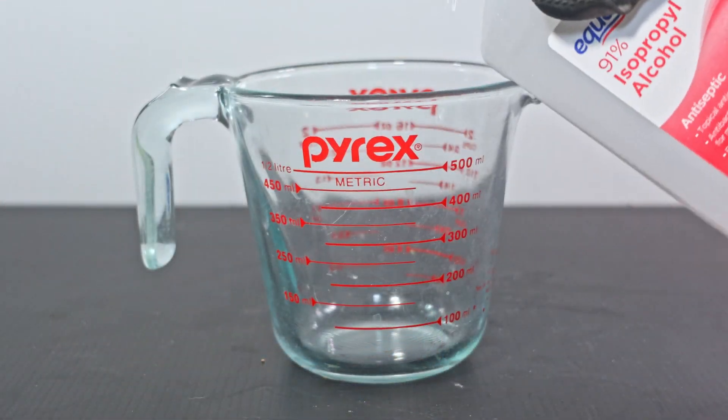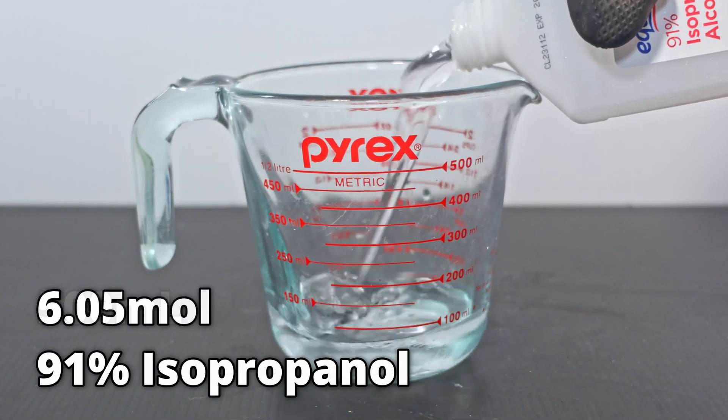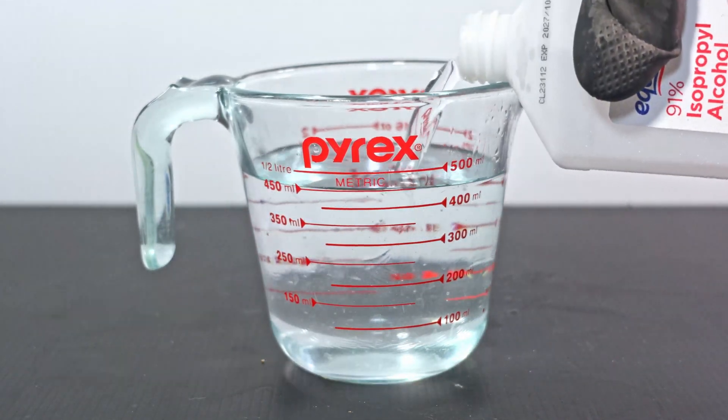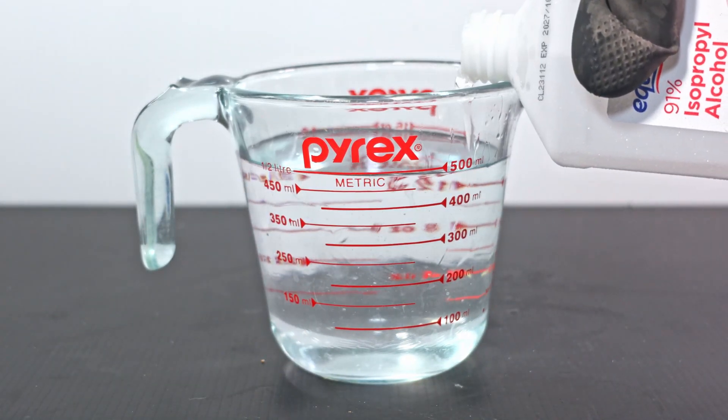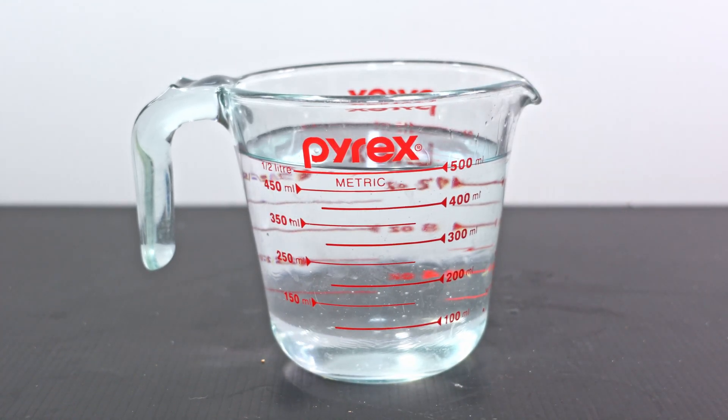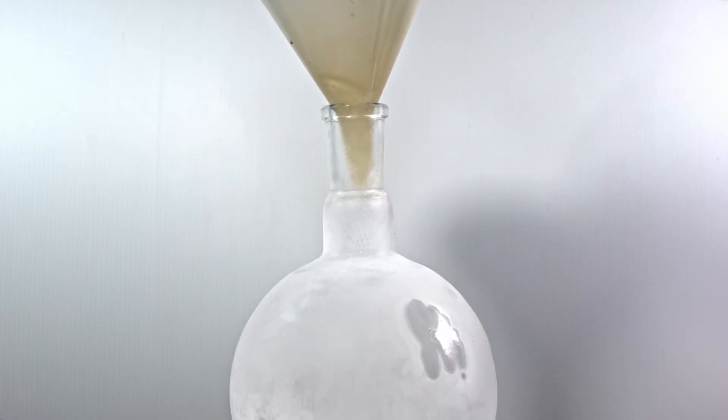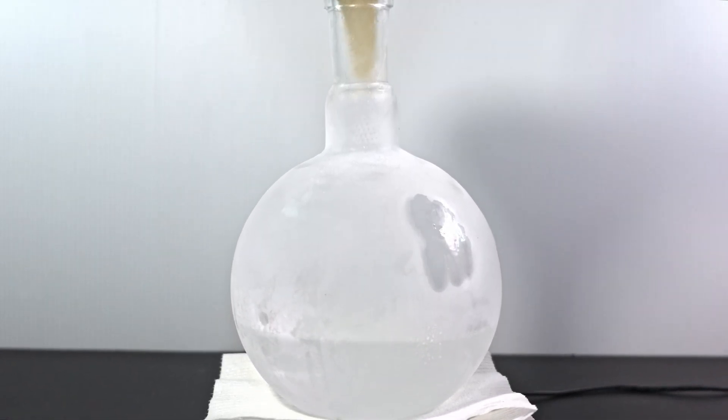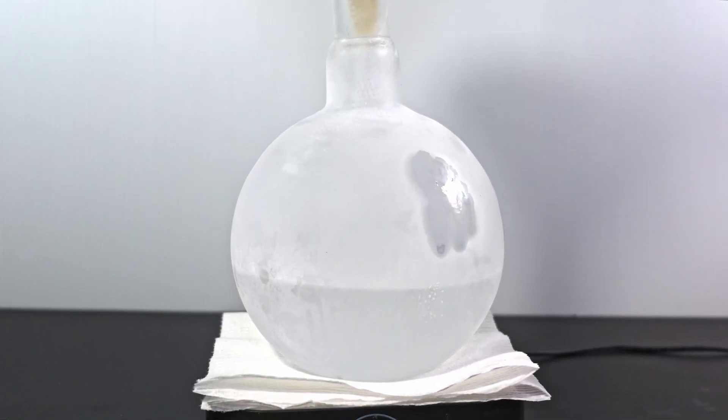Next, I pour out 500 milliliters or 6.05 moles of freezing 91% isopropyl alcohol. You could use 99%, but note that the extra water does help buffer sulfuric acid's oxidizing effects. I pour this into a pre-chilled 1-liter boiling flask to further keep it cool. Remember, the colder you start, the less likely bromide will oxidize into bromine.